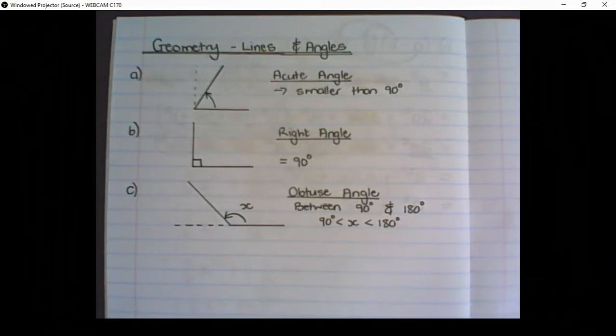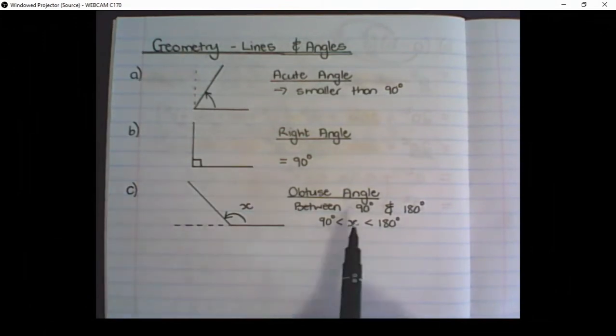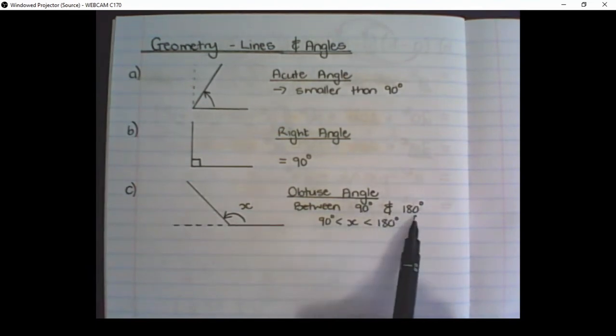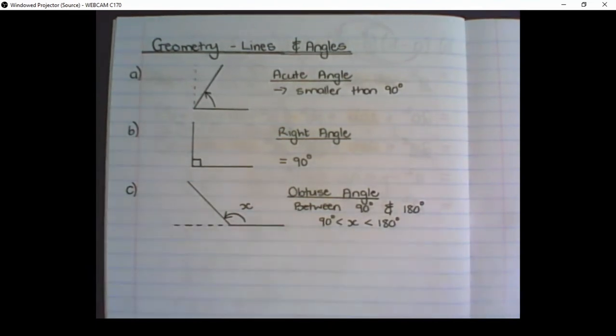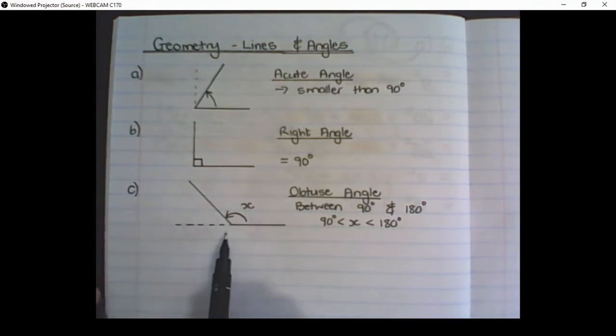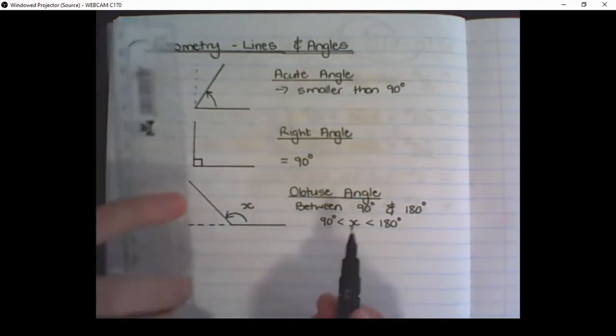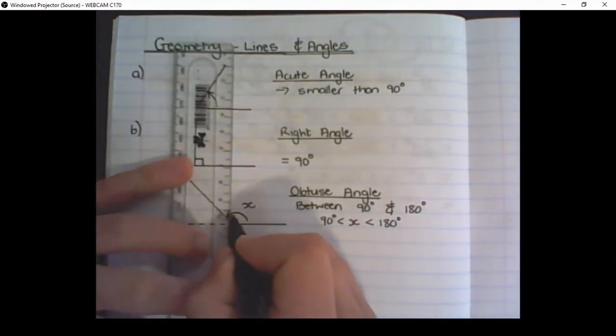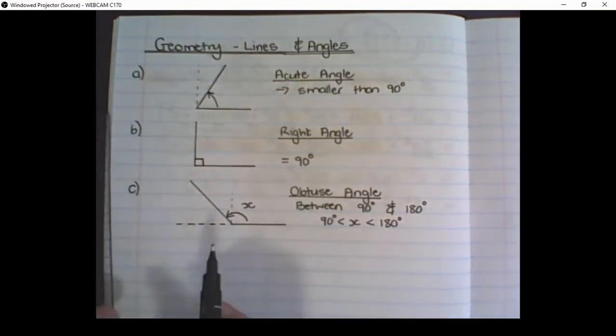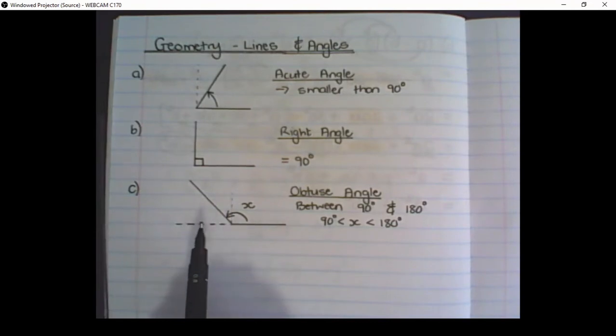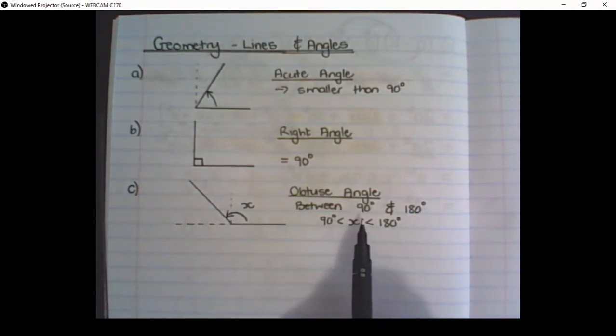Our third type of angle is called an obtuse angle. This is an angle that is between 90 degrees and 180 degrees. So if I look at the angle X, I can see that it goes past the right angle, but it doesn't go to a complete straight line. So it is between 90 and 180 degrees. And the way we write it is the angle X is smaller than 180 degrees, but bigger than 90 degrees.